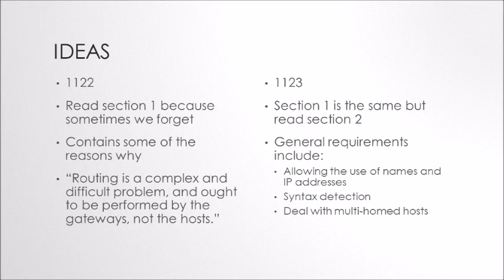One of the reasons it was fun looking at this RFC again is because we sometimes forget where a lot of our ideas come from, how many people were involved in getting these ideas put down to paper. This pair of RFCs includes many of the reasons why we do the things that we do — the requirements, the musts and the shoulds involved in each one of these layers. It's also a really good overview if you're trying to understand why we do the things that we do. I'd encourage anybody in the networking world to read section one in 1122 or 1123 — it turns out they're the same. And in 1123, also read section two, because it talks about requirements for connections. One idea here is that routing is a complex and difficult problem that ought to be performed by the gateways and not the hosts, so there's a whole section on source routing and why that's problematic.